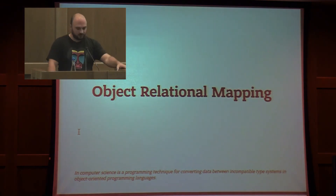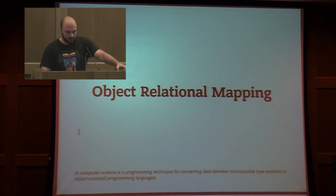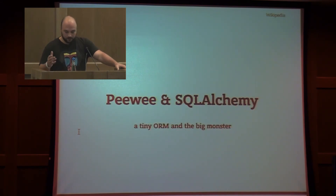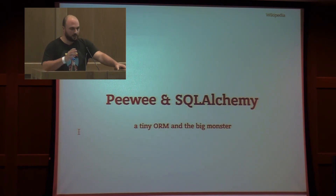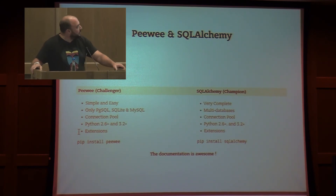Next point: object-relational mapping. The definition from Wikipedia: in computer science, it's a programming technique for converting data between incompatible type systems in object-oriented programming languages. In this part of the talk I'm going to show some parts using PeeWee and SQLAlchemy — a tiny ORM and a big monster. Firstly, PeeWee.